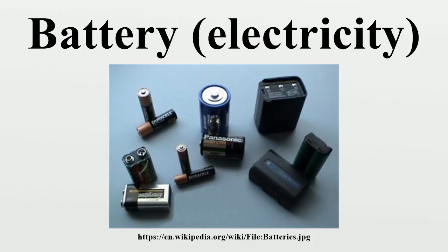The voltage developed across a cell's terminals depends on the energy release of the chemical reactions of its electrodes and electrolyte. Alkaline and zinc carbon cells have different chemistries, but approximately the same EMF of 1.5 volts.